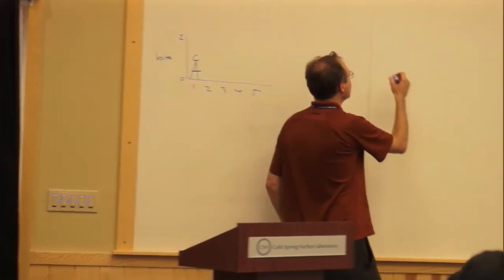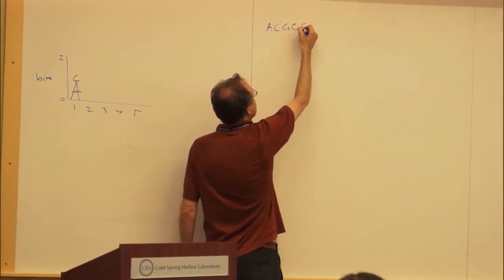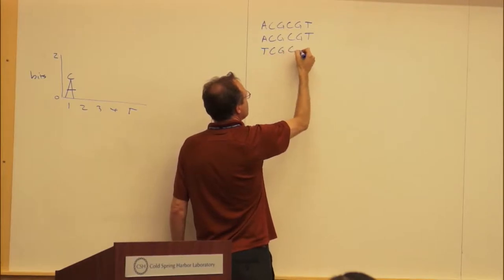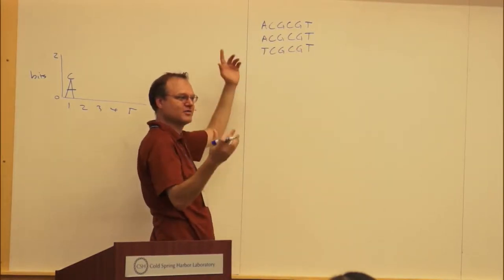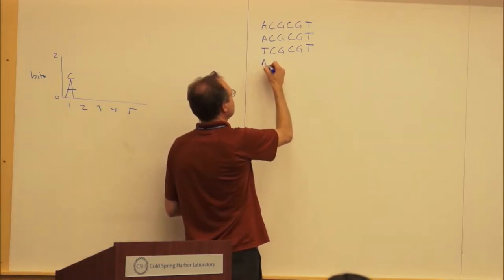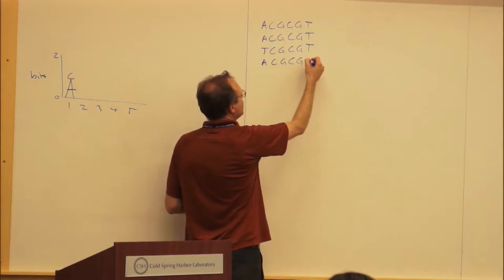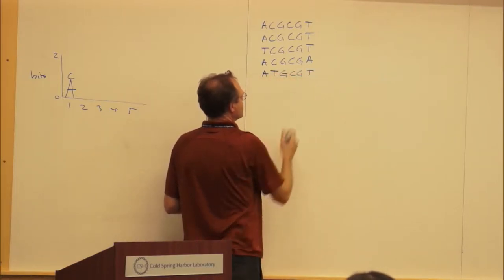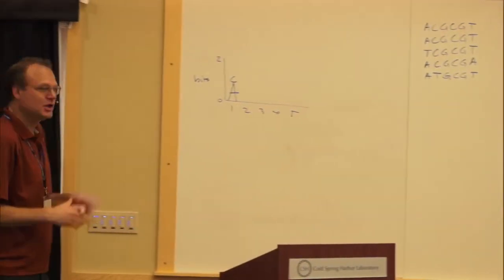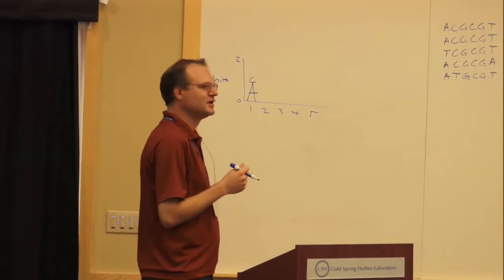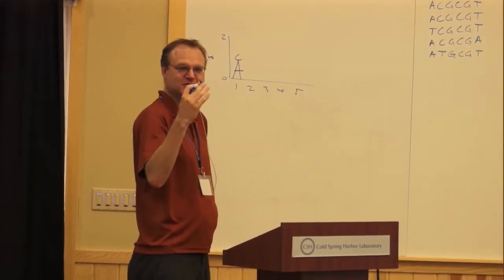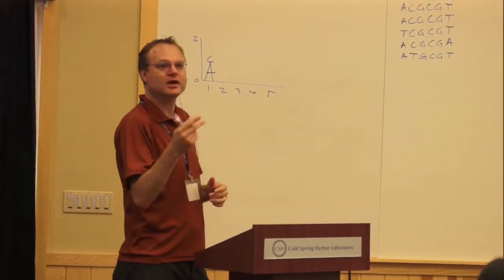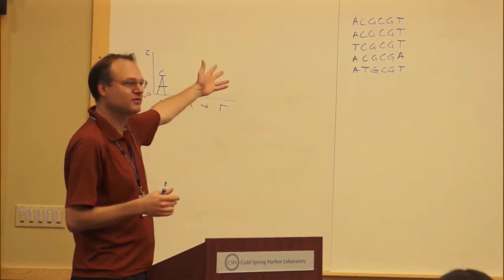When you think about it as DNA, you have a set of DNA sequences and you want to summarize their properties. One way to summarize is just write a list of the DNA sequences. So we could have A, C, G, C, G, T — and then another example of this binding site. But next you may see something like this: there's a point mutation. You could have a T there. So somehow there's a tolerance for a mutation there, and then maybe the next motif has an A at the end, and once in a while there's a T instead of a C.